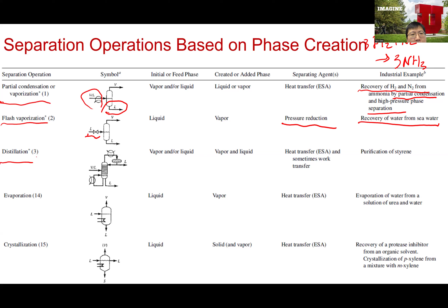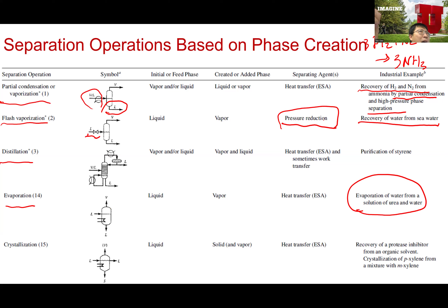Distillation is the separation process used most often in the chemical industry — we'll talk about this in much more detail later in the class. Then we have evaporation, which is similar to flash vaporization, but instead of reducing the pressure, you add heat to your mixture and just boil the water to produce water vapor. Then there is crystallization, which is about generating solids from a solution.